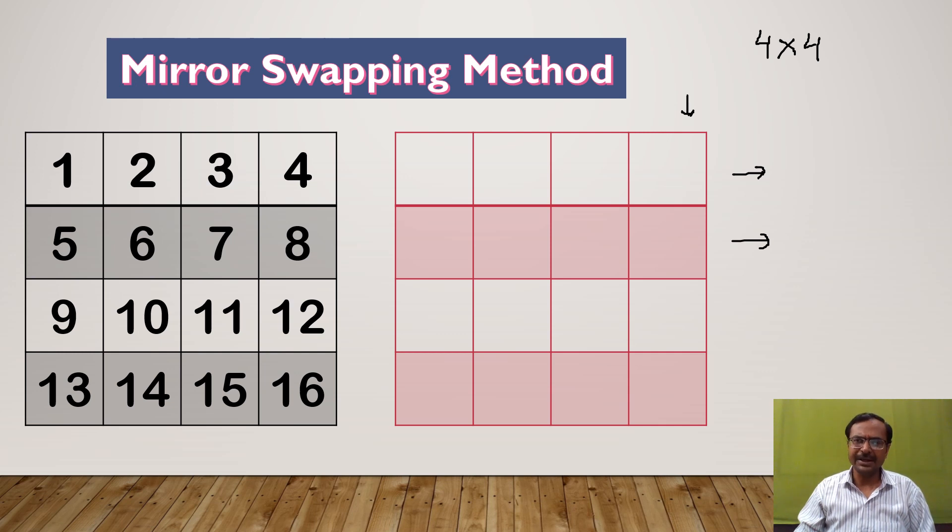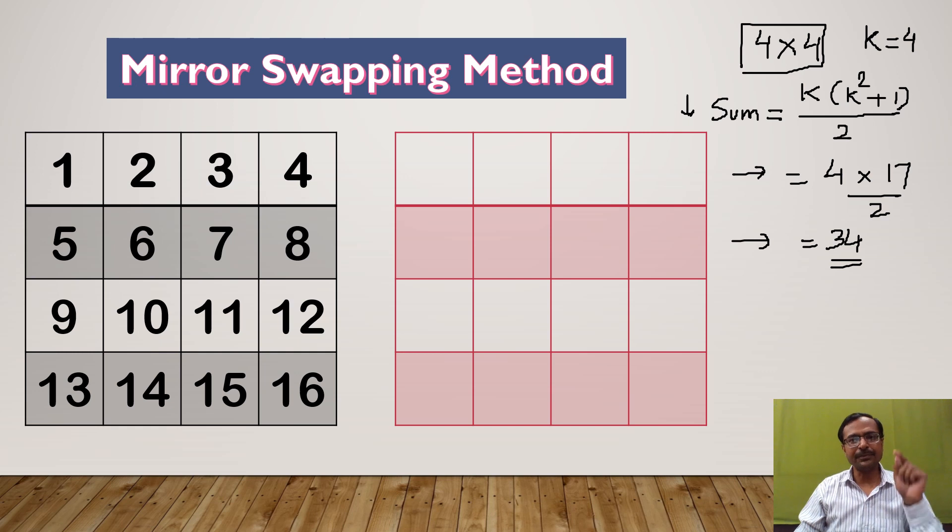There is a formula for that, a very easy formula: k times k square plus 1 upon 2. This will be the sum of the numbers along a row or along a column or along the diagonal. If we are talking of 4 by 4 magic square, then k is 4. So if you substitute k equal to 4 here: 4 times 4 square is 16 plus 1, 17 upon 2, 68 upon 2. This is 34.